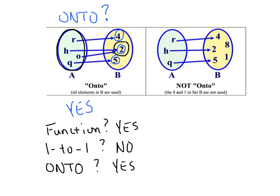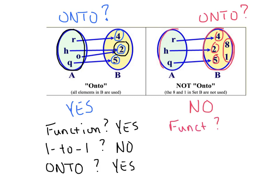Now the mapping on the right — is it onto? The 4, 2, and 5 got used, but the 8 and the 1 did not get used. Since those values are sitting on the sidelines unused, this is not an onto function. Is it a function? Every input is unique, so yes. Is it one-to-one? The output values 4, 2, and 5 each got used only once, so yes, it is one-to-one. But it is not onto.